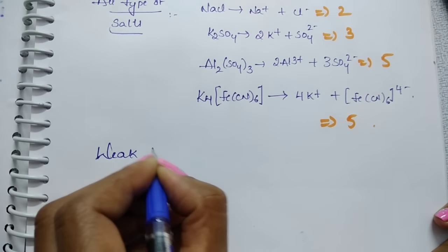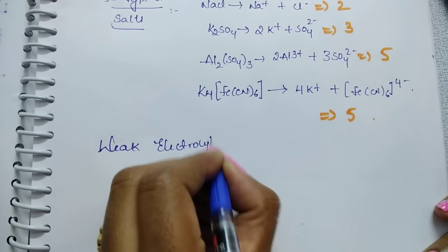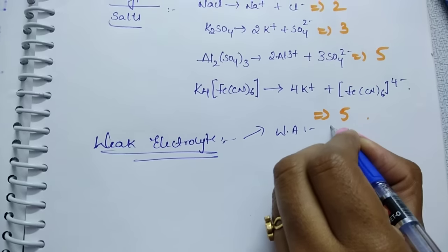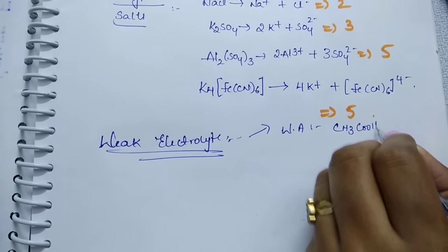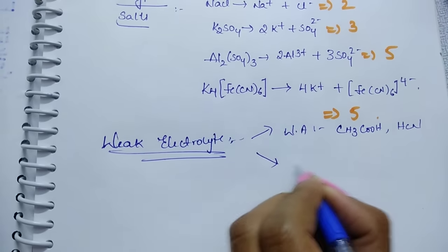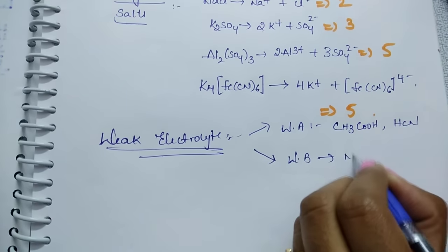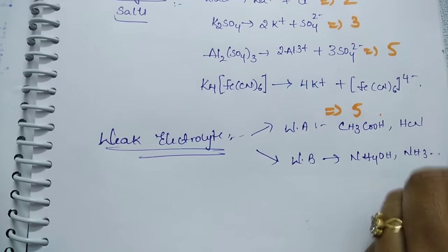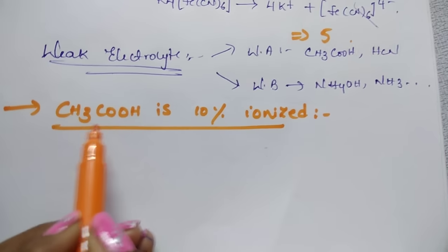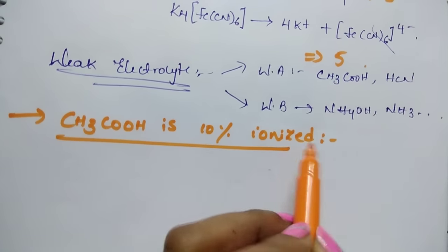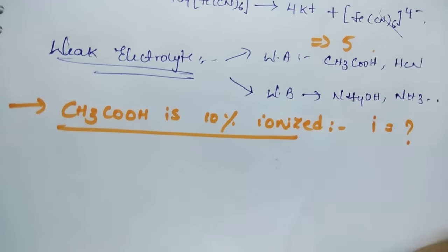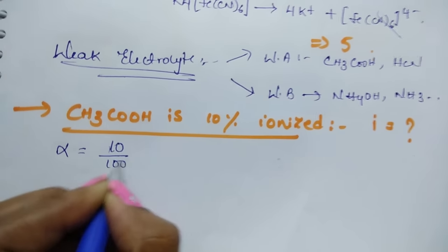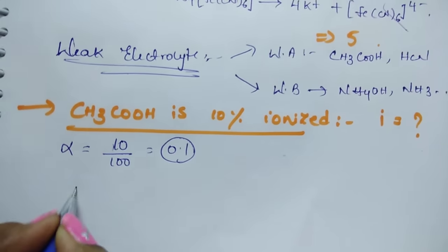Weak electrolytes include weak acids like CH₃COOH (acetic acid) and HCN, and weak bases like NH₄OH and ammonia. Consider this question: acetic acid is 10% ionized. Calculate Van't Hoff factor I. 10% ionized means alpha = 10/100 = 0.1.